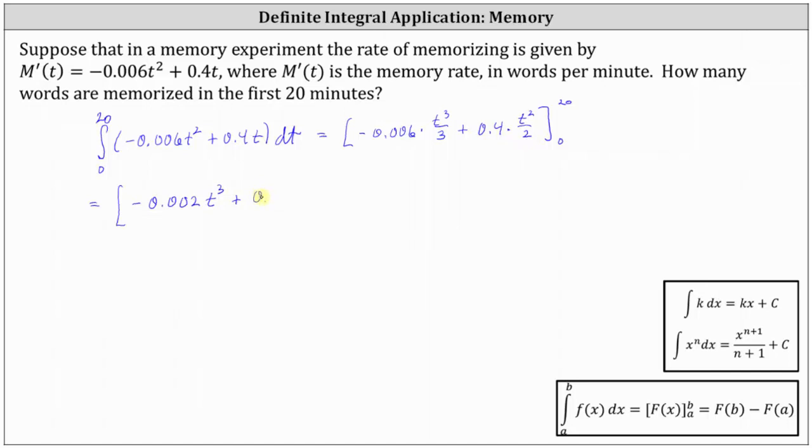And now we determine F(20) minus F(0) where F(20) is equal to -0.002 times the cube of 20 plus 0.2 times the square of 20. And then minus F(0) is just going to be zero plus zero giving us zero.